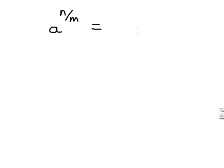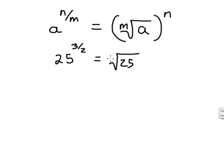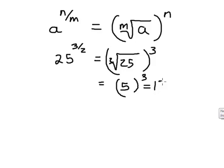You can also have rational exponents where the numerator is not 1. If I have a to the n over m, that means I take the mth root of a and then raise it to the n power. For example, 25 to the 3/2 means take the square root of 25 and raise that to the third power. The square root of 25 is 5, and 5 raised to the third power is 125.